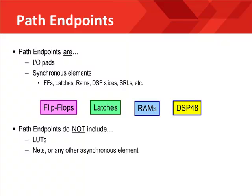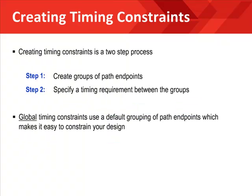When you think about improving the timing of your design, remember that you are first grouping path endpoints, and the only types are I/O pads and synchronous elements. Once path endpoints are grouped — which is done easily by global timing constraints — the next step is to specify a timing objective between the groups. Global timing constraints are easy to make because they save you from manually grouping path endpoints. They group elements based simply on the clock signal connected to those synchronous elements.